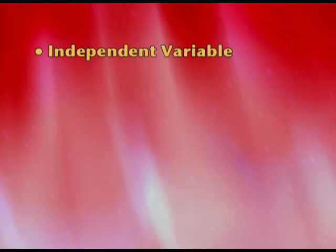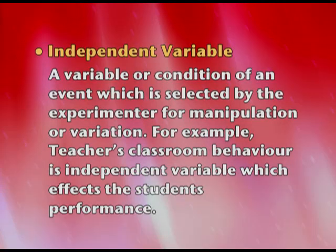Let's understand these three kinds of variables. Independent variable (IV) is a variable or condition of an event which is selected by the experimenter for manipulation or variation. For example, a teacher's classroom behaviour is an independent variable which affects the student's performance. That is the IV — the cause which is manipulated. If we are using five different teaching methods in five different classrooms, that is an independent variable.